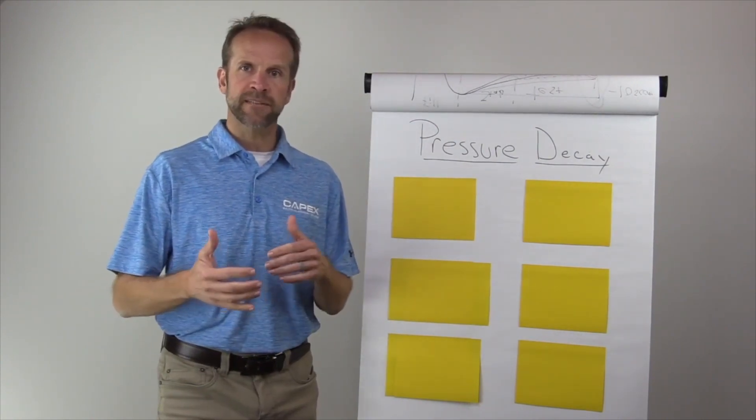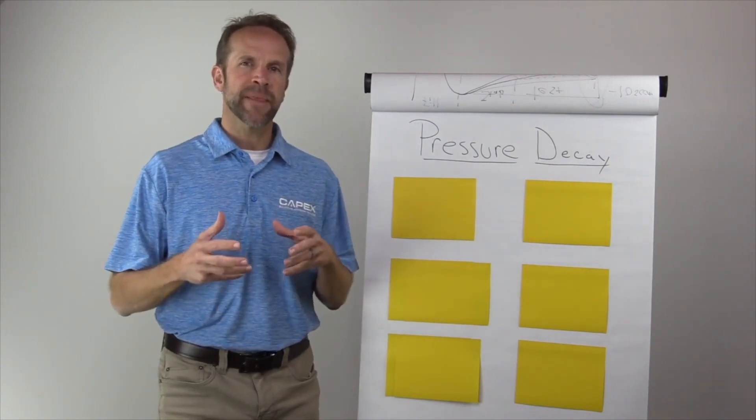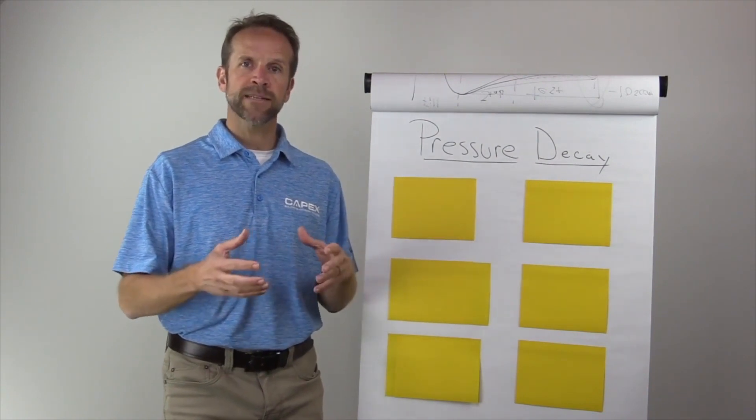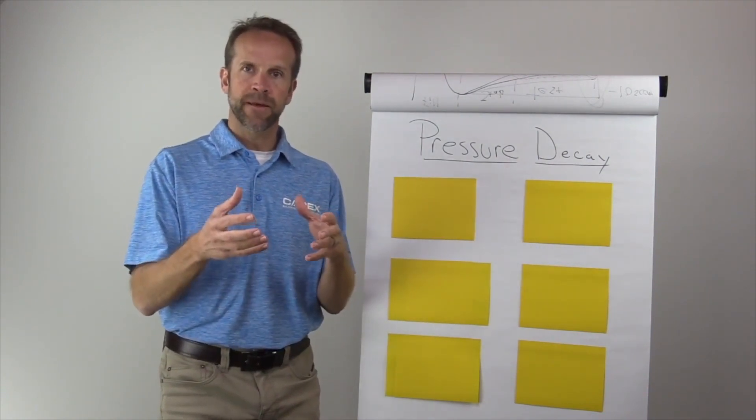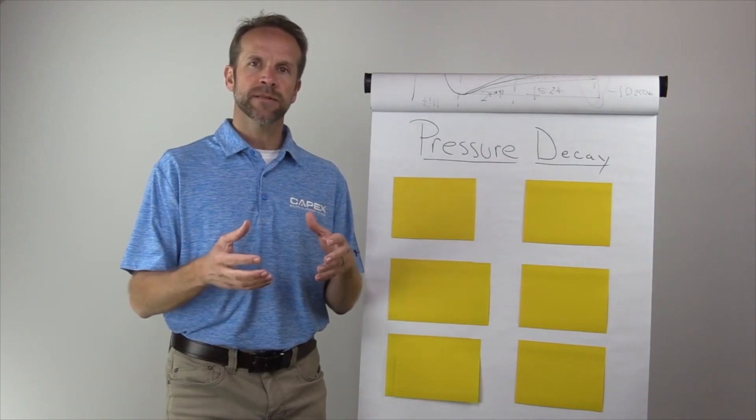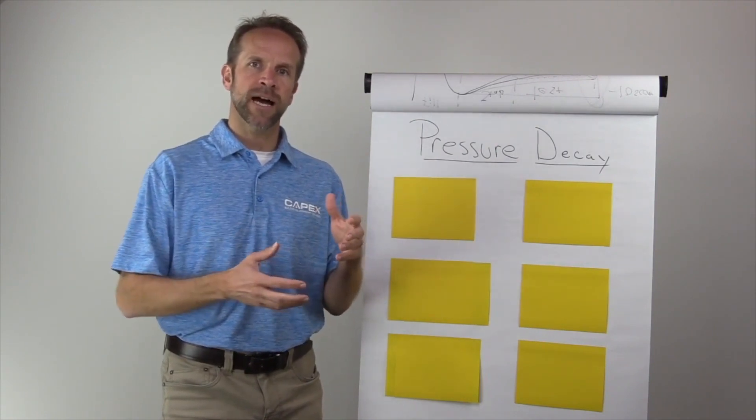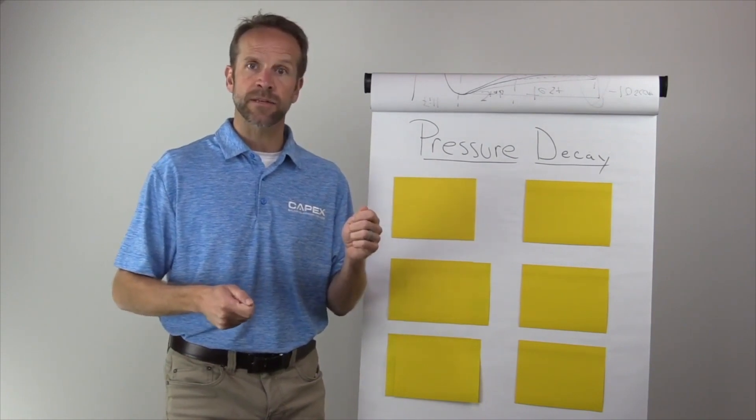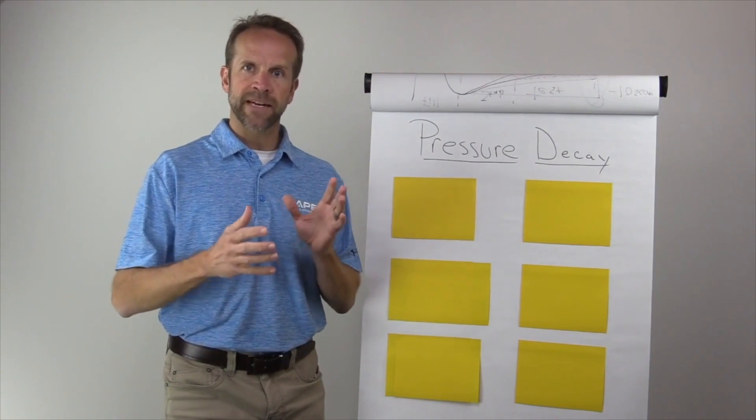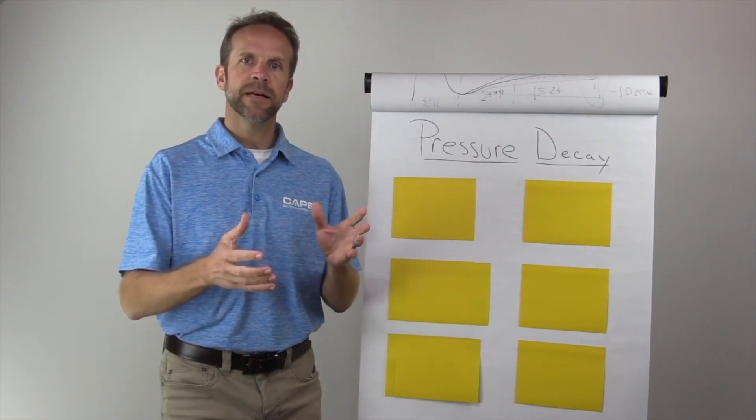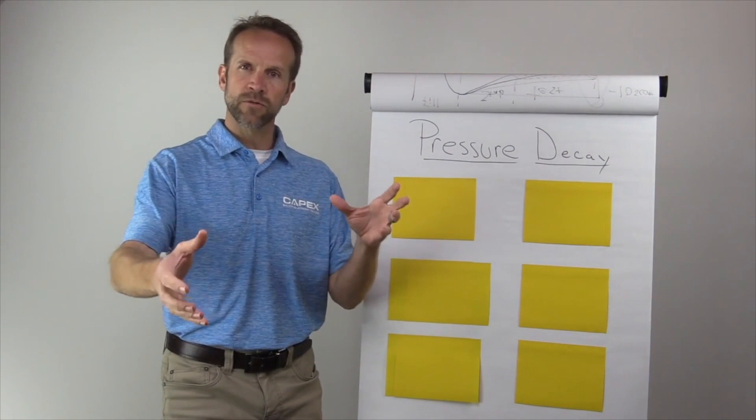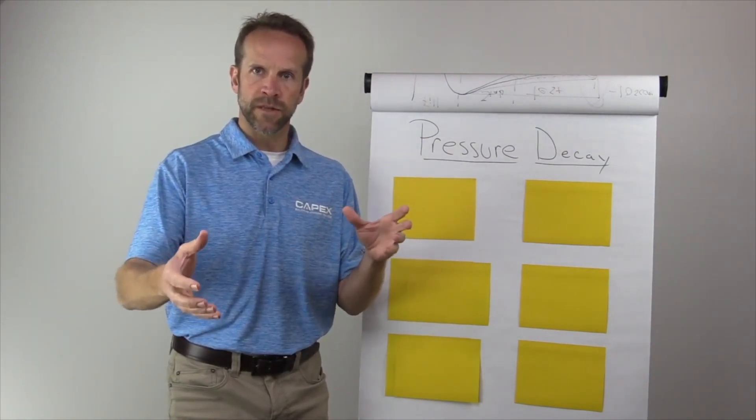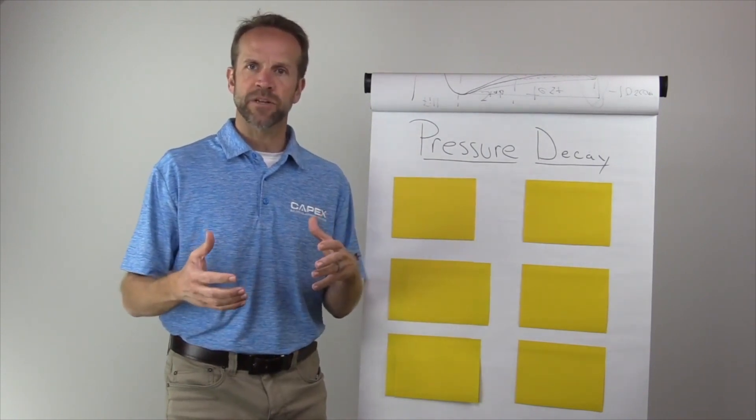With pressure decay leak testing, first let's talk about the definition. Pressure decay is measuring pressure loss over time. We're pressurizing a volume or your test part and measuring the pressure loss over time. What that means is theoretically you could isolate the test circuit. You could disconnect the air pressure going into the instrumentation and the test would still run because you've got a closed circuit where we are measuring the pressure loss.